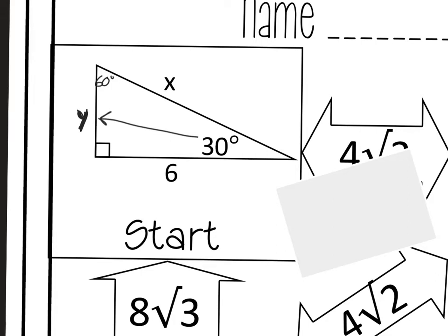So if I call that Y, then what I know is that the side across from 60 is short side times root 3. So my short side is Y times root 3.